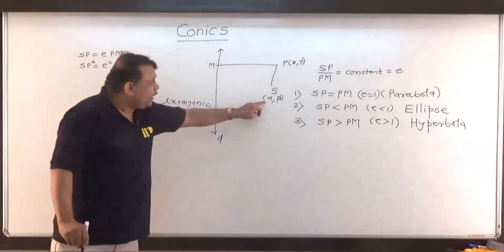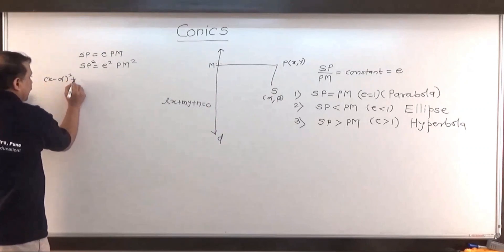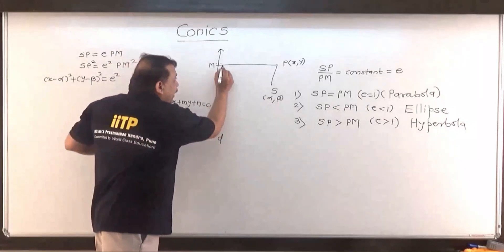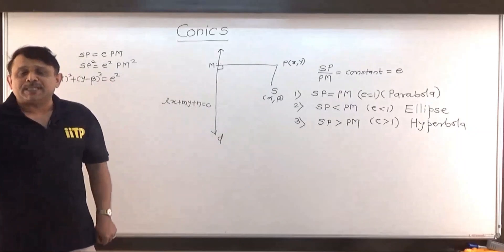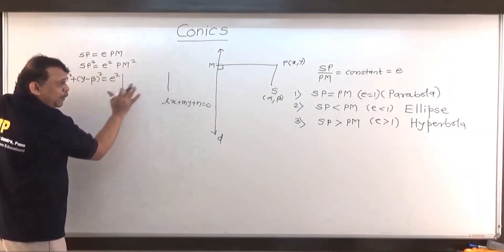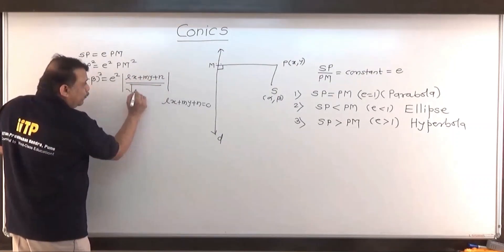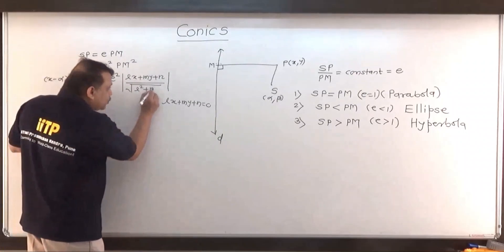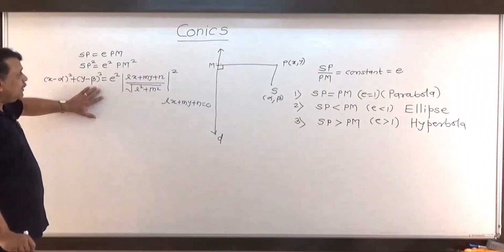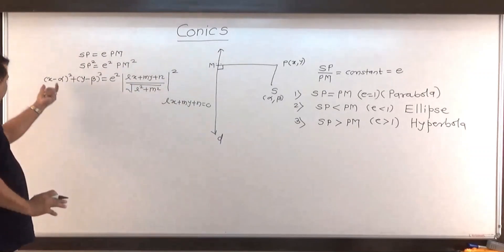S is known to be (α, β) and P is known to be (x, y), so the distance between S and P by the distance formula gives: (x − α)² + (y − β)² equals e² times the square of the perpendicular distance. From point P we have dropped the perpendicular on line D whose equation is lx + my + n = 0, so by the perpendicular distance formula, PM equals (lx + my + n) divided by the square root of (l² + m²). Squaring this gives PM². This can be declared the general equation of the conic.